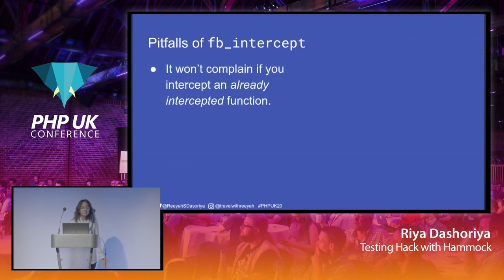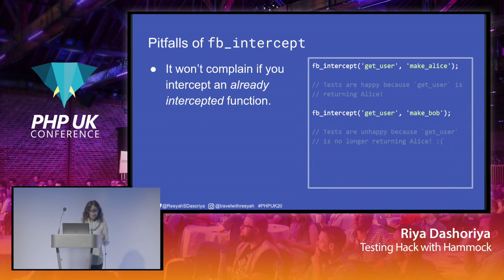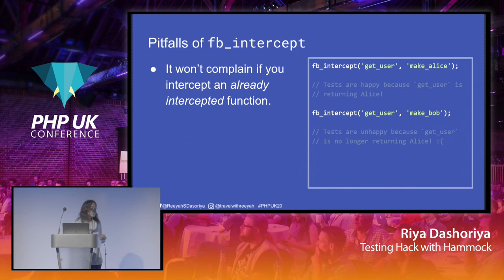The second problem is it won't complain if you intercept an already intercepted function. On the first line, you are intercepting a function called 'get_user' and making it call 'make_alice'. So in your test, whenever you call the get_user function, it will return Alice. But somehow, you don't realize and you mock it again, this time making 'get_user' call a handler function called 'make_bob'. Tests are unhappy at this point because 'get_user' will no longer return Alice. You can mock the same function as many times as possible — this is one of the disadvantages.